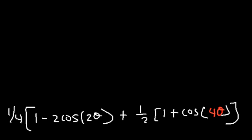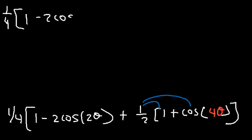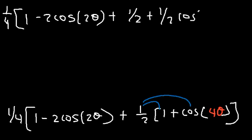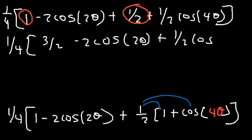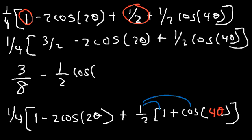Distributing the one-half inside gives one-fourth times (1 minus 2 cosine 2θ plus one-half plus one-half cosine 4θ). Adding 1 and one-half gives three-halves, so we have three-halves minus 2 cosine 2θ plus one-half cosine 4θ. Distributing the one-fourth: one-fourth times three-halves is three-eighths; one-fourth times negative 2 is negative one-half; and one-fourth times one-half is one-eighth. The final answer is 3/8 minus (1/2)cos 2θ plus (1/8)cos 4θ.